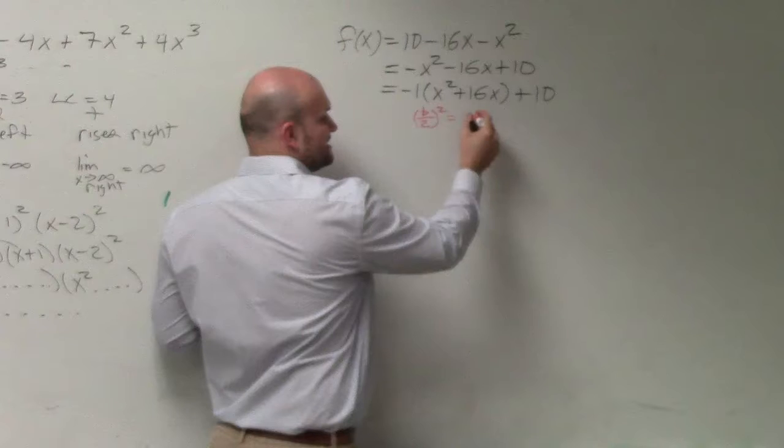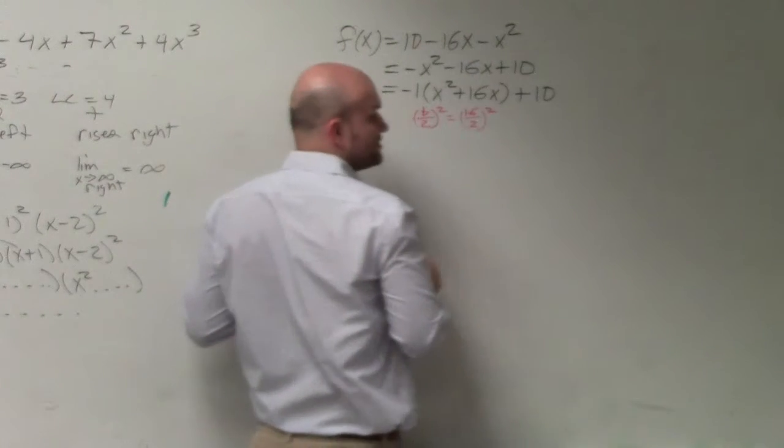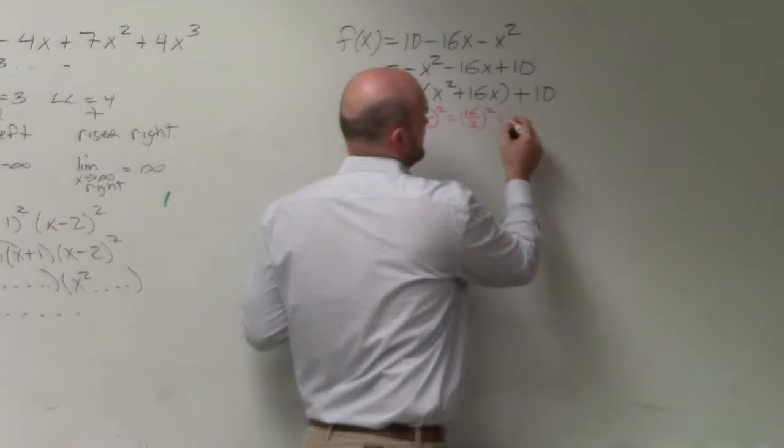So b, in this case, is 16 divided by 2 and square it. 16 divided by 2 is 8. 8 squared is 64.